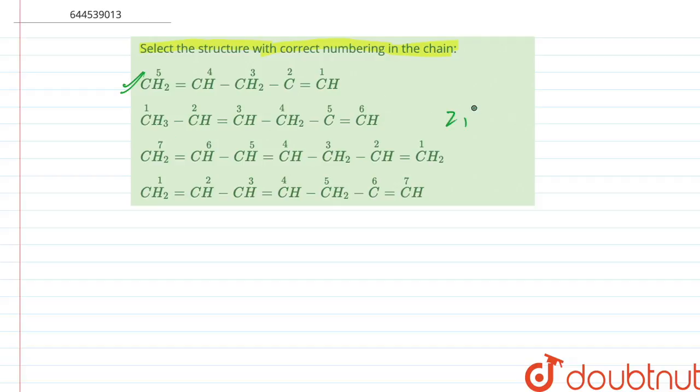For this, the numbering should have been such that we would have got 1 and 4, which would have been the lowest numbering. So this is incorrect. Now taking this one, this one is correct.